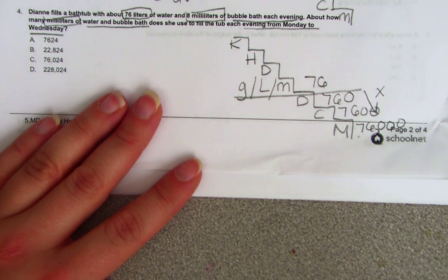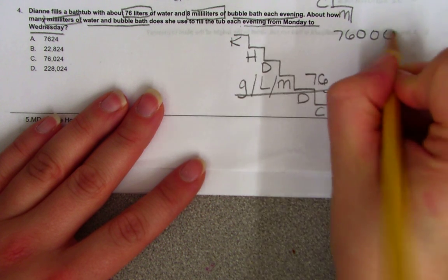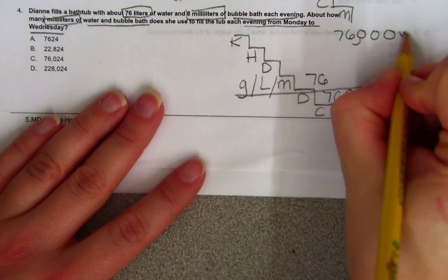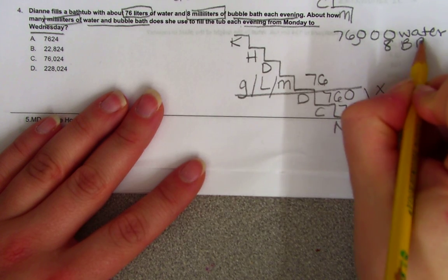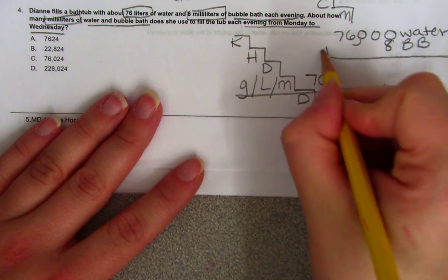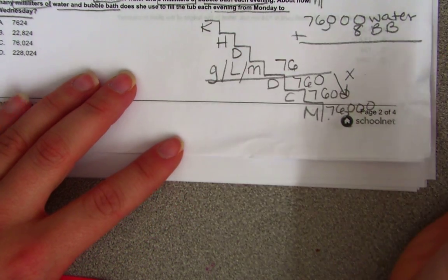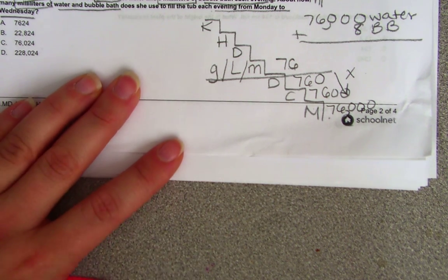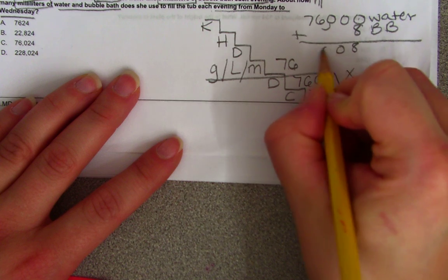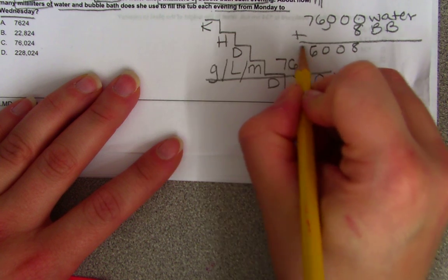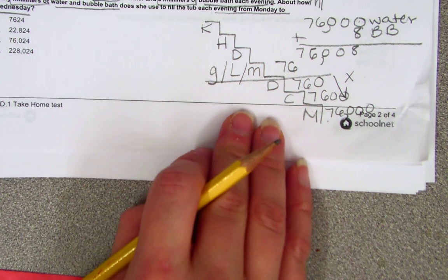Now that's how much water. So this answer is 76,000. That's just my water. And she puts 8 of bubble bath. So it's called BB. So really what I'm doing is adding it because it wants to know how much milliliters total. So 8 plus 0 is 8, 0, 0, 6, 7. So I use 76,008.